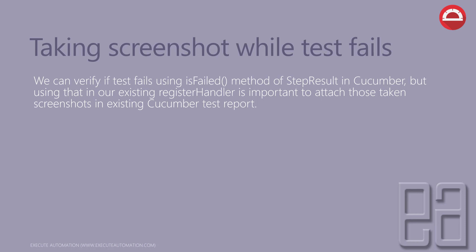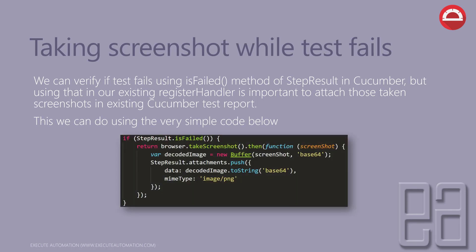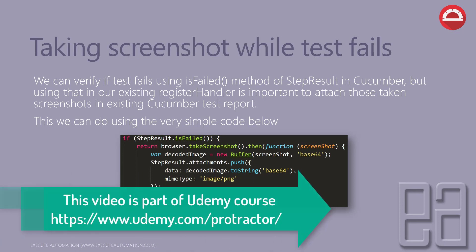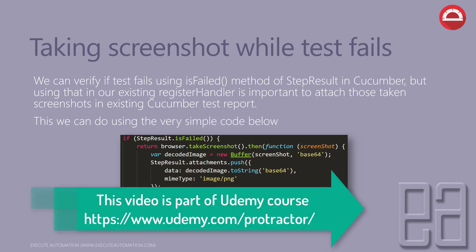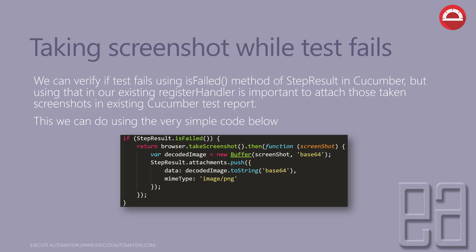Using that in our existing register handler is important to attach the taken screenshot in our existing Cucumber test report. We can do this using very simple code, as shown: we have a stepResult.isFailed method — if it returns true, we call browser.takeScreenshot(), and then push the attachment to a specific type, like image/PNG in base64 decoding format, and attach it within our Cucumber report.